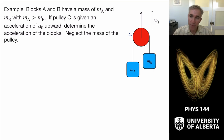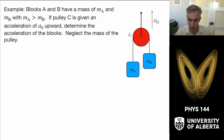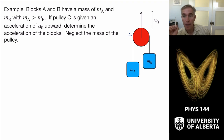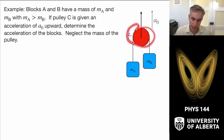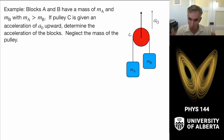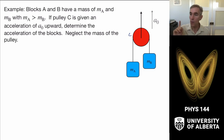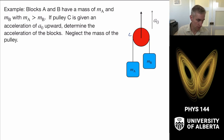You might consider accelerations relative to the pulley and apply F = ma, balancing forces over the top of the pulley. But the tricky thing is that this pulley is not part of an inertial reference frame. The inertial reference frame is watching the whole thing accelerate upward from an external perspective. So we have to apply Newton's laws in the inertial reference frame.